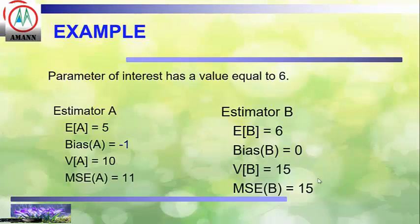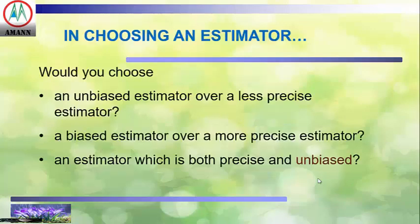Example: the parameter of interest has a value equal to 6. These are the data for estimator A and estimator B. The expected value of estimator A is 5 while B is 6. The bias of A is negative 1 while the bias of B is 0. The variance of A is 10 and the variance of B is 15. The mean square error of A is 11 and the mean square error of B is 15. So in choosing an estimator, you prefer an unbiased estimator over a less precise biased one, and ideally choose an estimator that is both precise and unbiased.